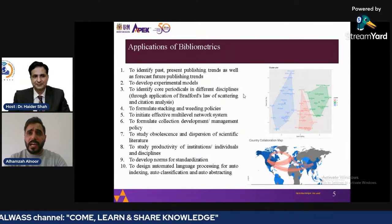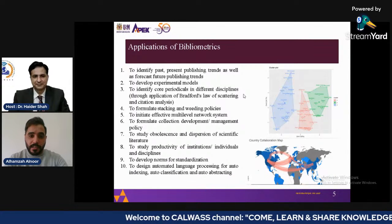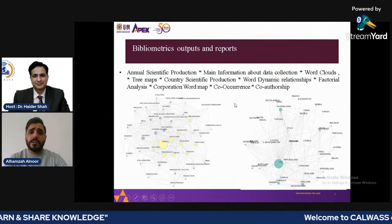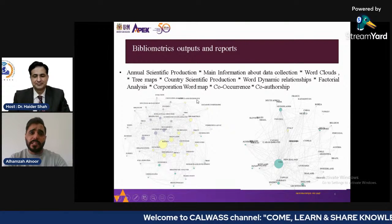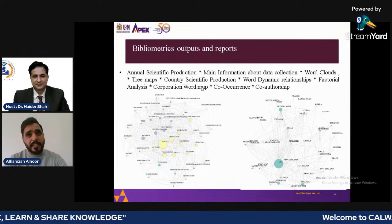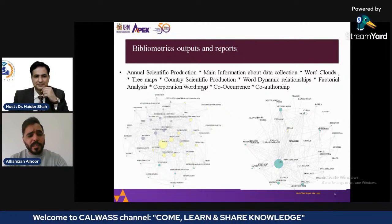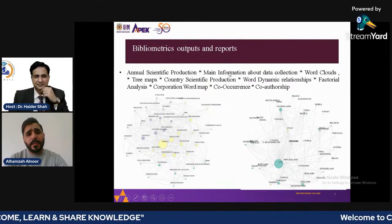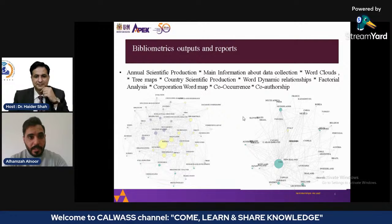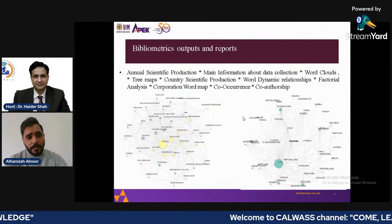The main benefit of bibliometrics is to reorganize and summarize findings of previous studies and overcome the reliability and objectivity issues of systematic literature review and meta-analysis. The outputs we can get include: annual scientific production, which explains scientific output over time showing which periods had high or low production, and main information about data collection, such as how many keywords, references, authors, and institutes produced work on a topic.